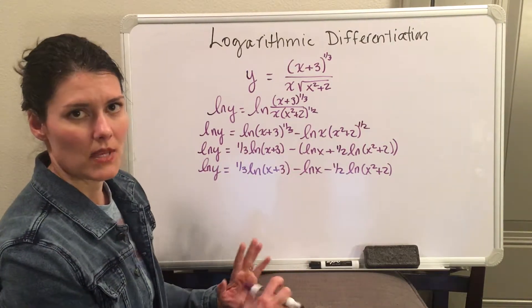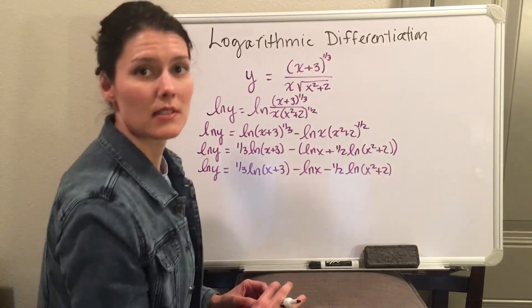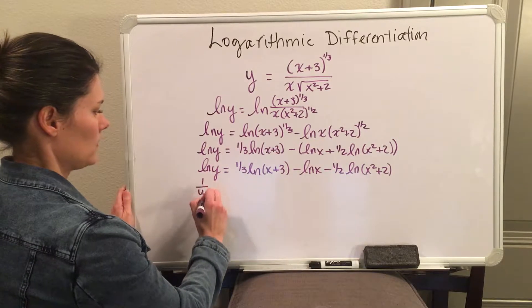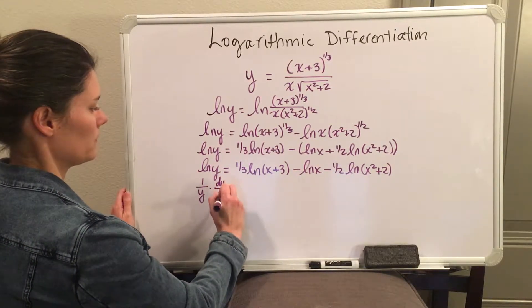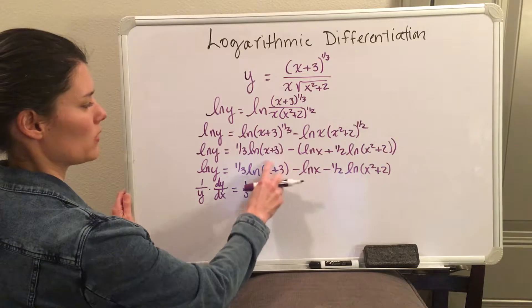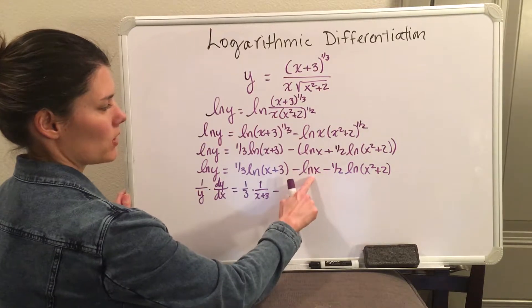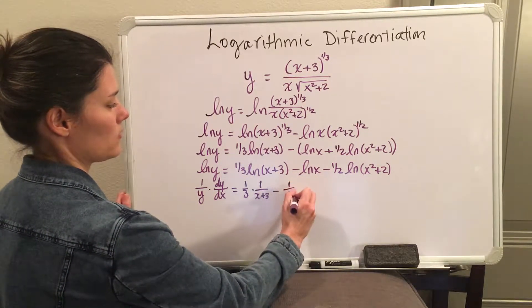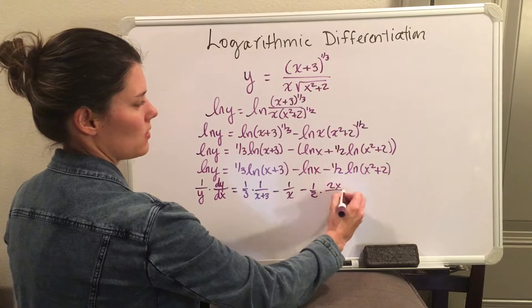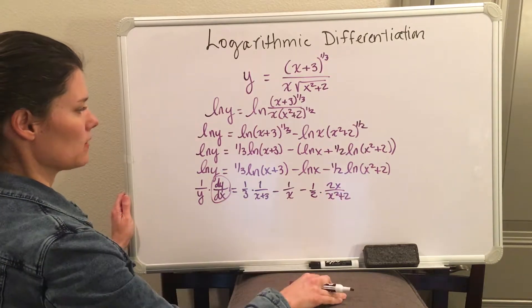Now you haven't done any of the calculus yet, so make sure you don't stop here. Our next step is to actually take the derivative. You are going to use implicit differentiation as well, because when you take the derivative of natural log of y, it will be 1 over y times dy/dx. That will equal one-third times 1 over x plus 3, minus 1 over x, minus one-half times 2x over x squared plus 2.